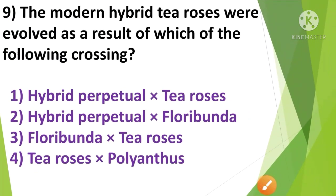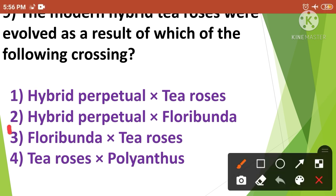Next question: The modern hybrid tea roses were evolved as a result of which of the following crossing? 1st option cross between hybrid perpetual and tea roses, 2nd option cross between hybrid perpetual and floribunda, 3rd option cross between floribunda and tea roses, and 4th option cross between tea roses and polyanthus. The correct answer is option 3rd — cross between floribunda and tea roses.